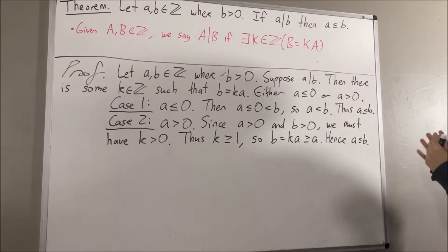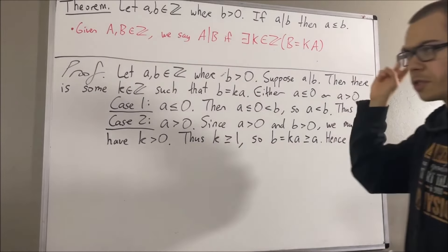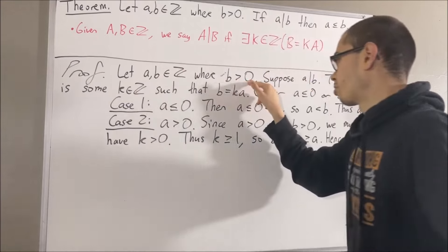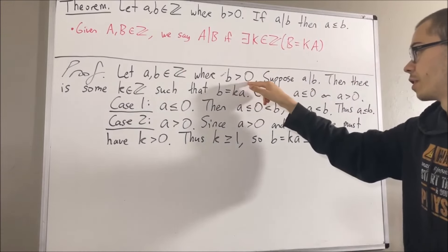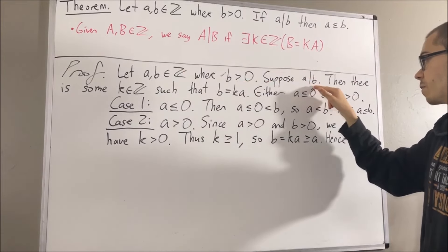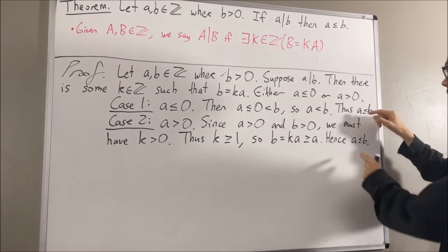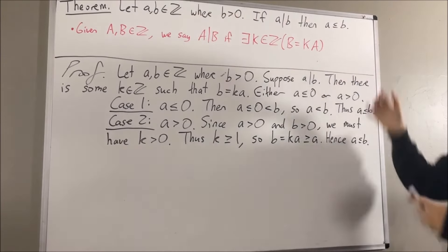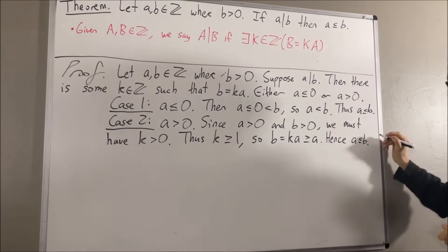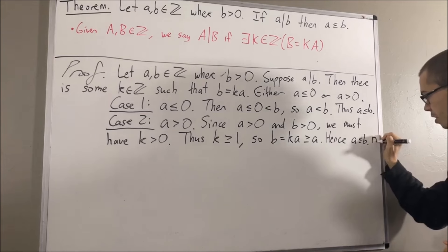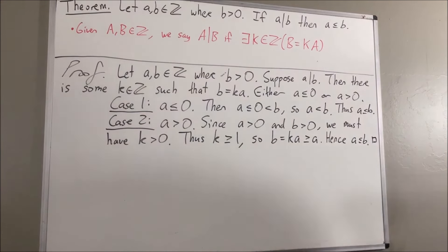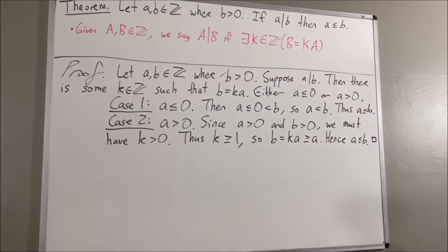Putting this all together, we gave ourselves two integers a and b where b is greater than zero, and we showed that if a is a divisor of b, then a is less than or equal to b. That's exactly what we wanted to prove, so this completes the proof. That's pretty much it for this video. Thank you.